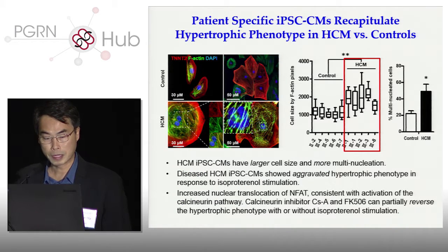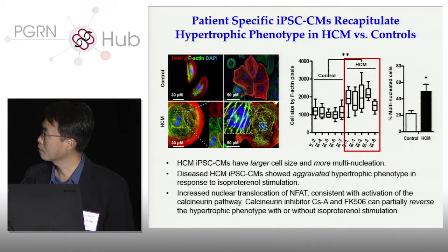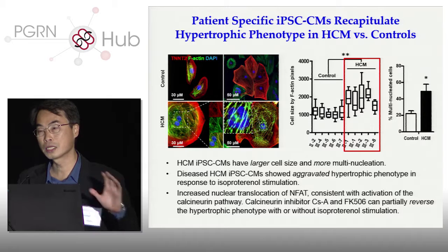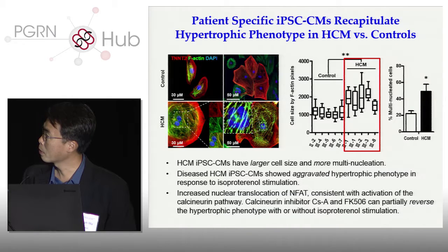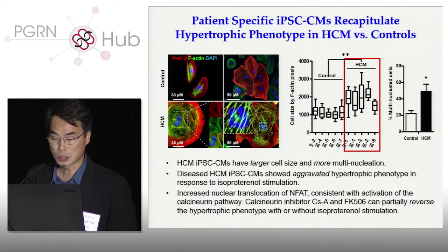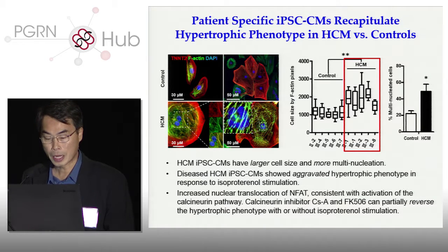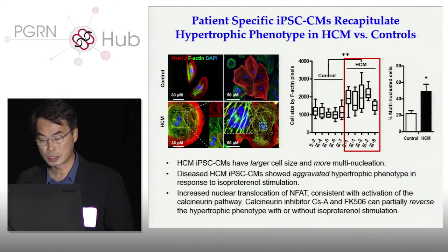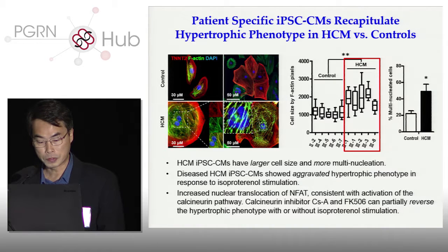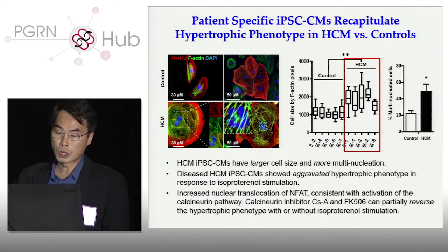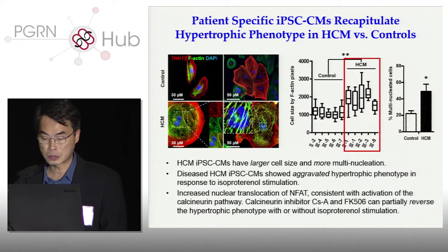About four to five years ago, we made iPSC cells from the entire family. We showed that the hypertrophic patients — the siblings with the mutation — have iPSC cardiomyocytes with a much bigger cell size compared to siblings without the mutation. There's also more multinucleation. You can aggravate this hypertrophy by giving the patient cells isoproterenol. We also showed increased nuclear translocation of the NFAT-calcineurin pathway, and you can use calcineurin inhibitors such as cyclosporine A and FK506 to partially reverse the hypertrophic phenotype.